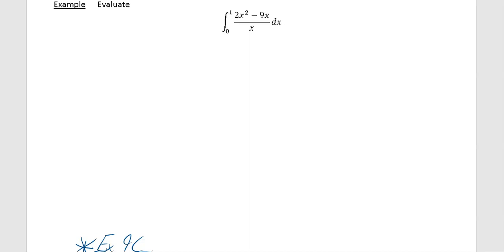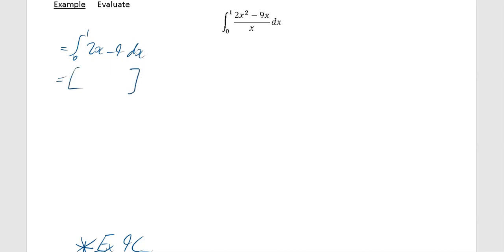This example says evaluate the integral between x equals 0 and x equals 1 of (2x squared minus 9x) over x, dx. Very like the last example — first get it in index form. Dividing each term by x gives 2x minus 9 dx. Moving to the square bracket with limits on the right-hand side, integrating 2x gives x squared, and integrating minus 9 gives minus 9x. Then substitute in 1 and 0.